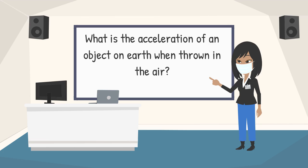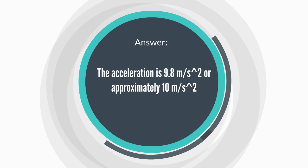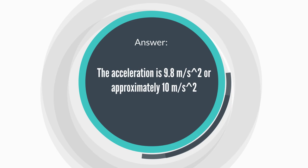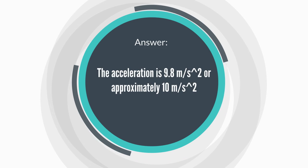And that acceleration happens to be 9.8 meters per second squared. But we usually round it up to 10 so we can conceptually understand the effects of gravitational acceleration on an object easier.